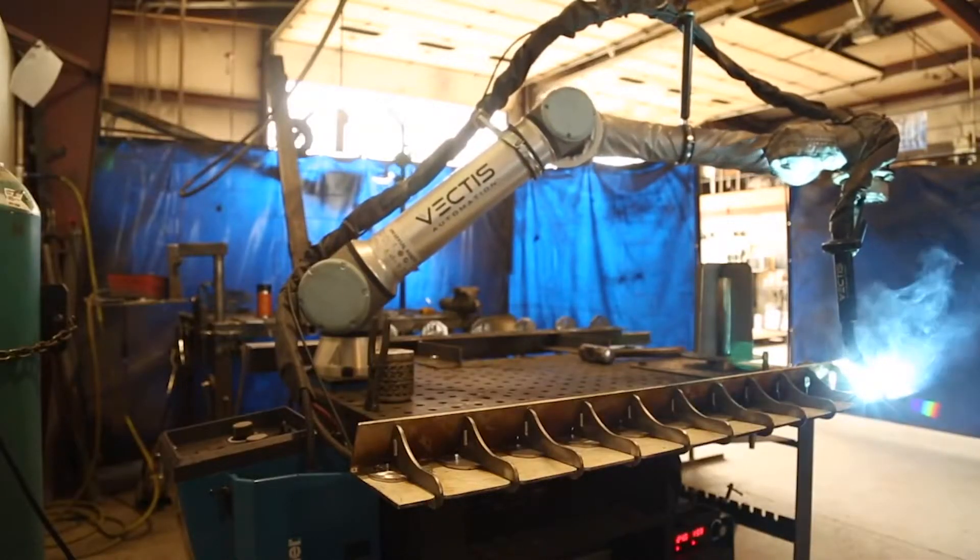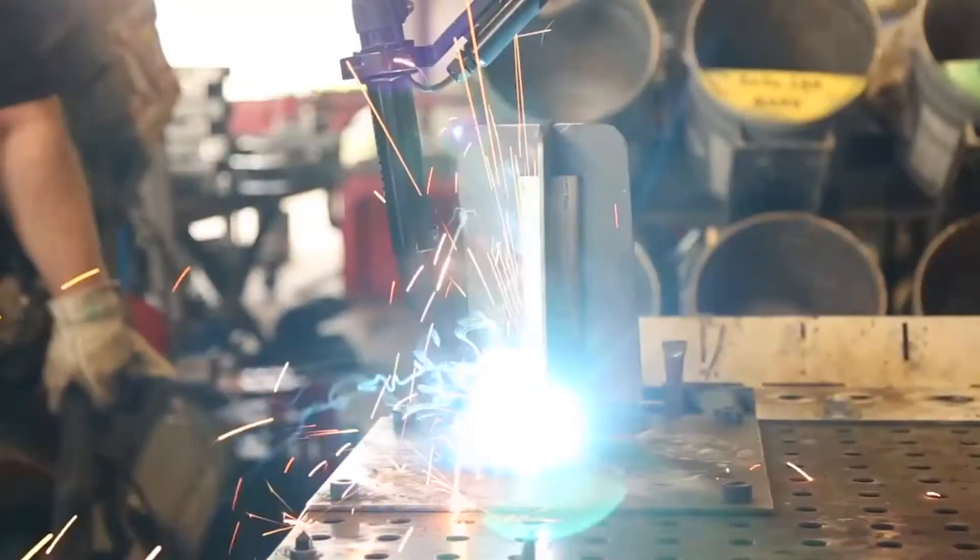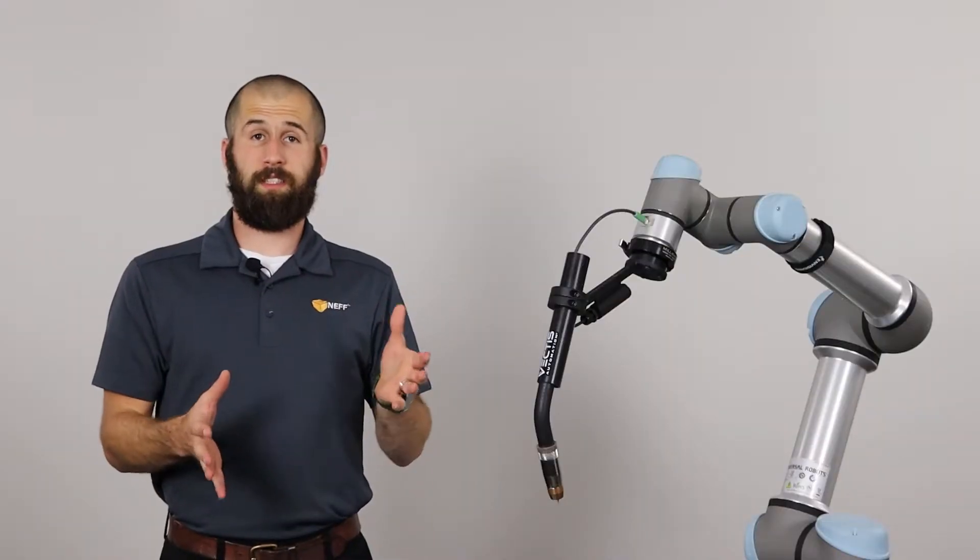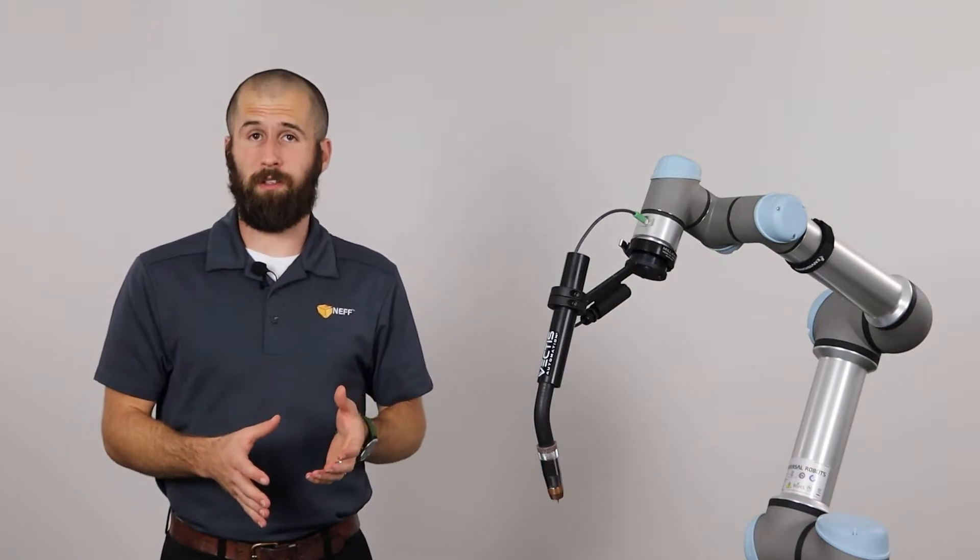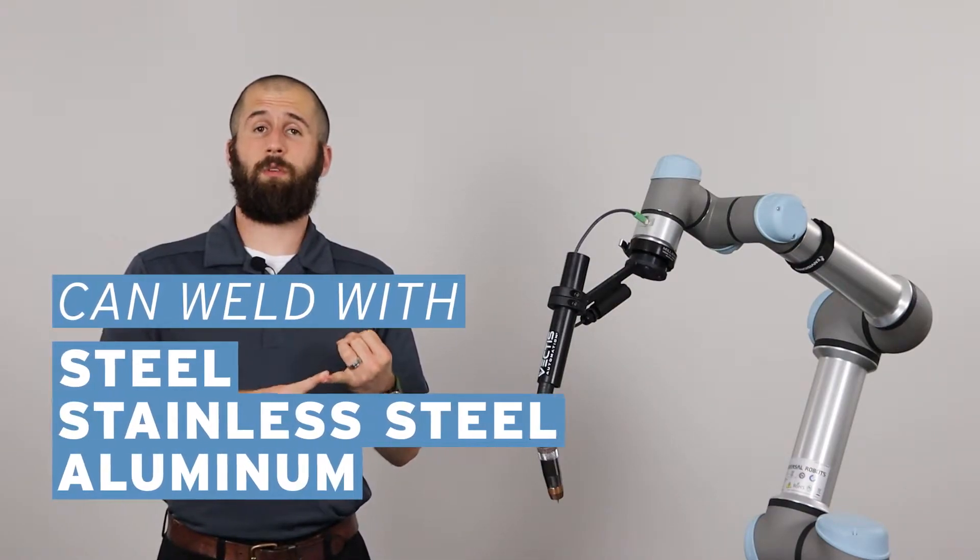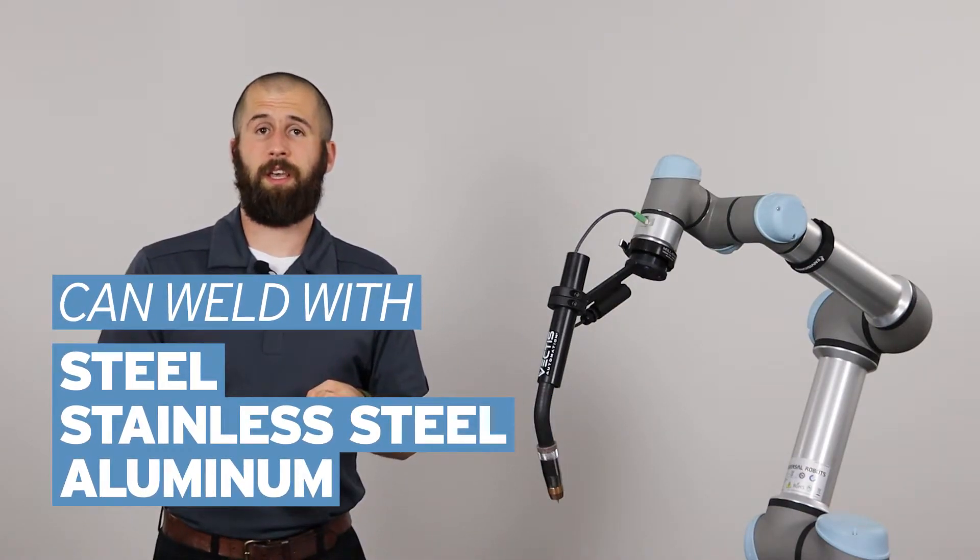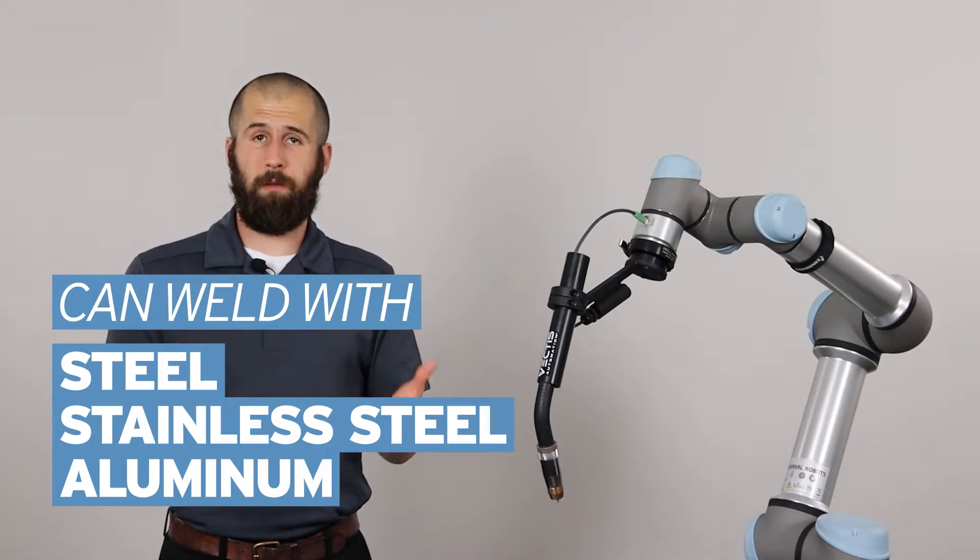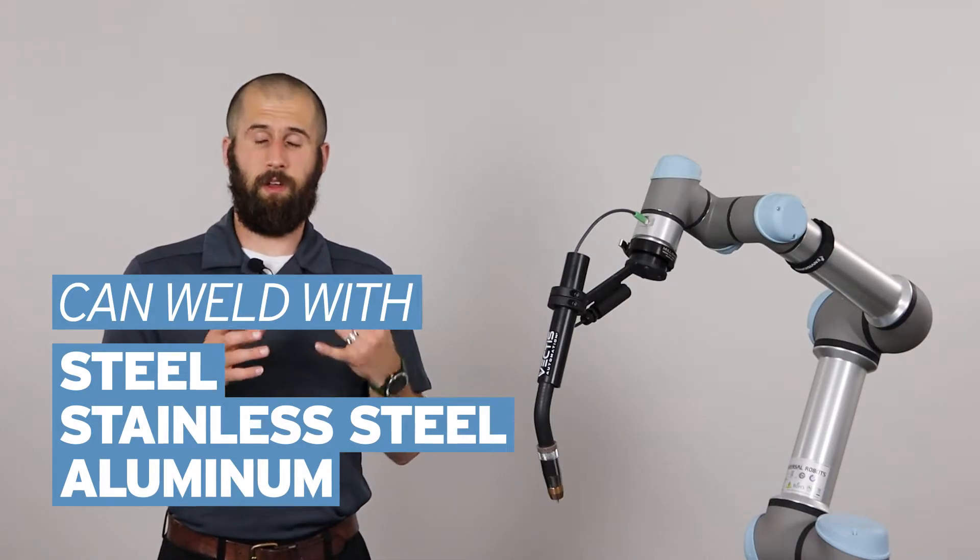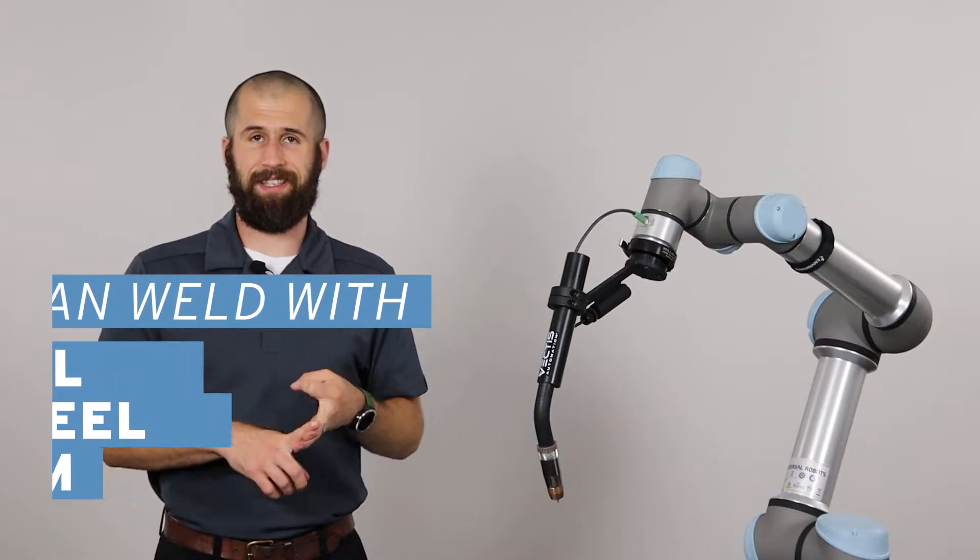The Vectis system provides a safe, mobile, and easy to program welding solution. The Vectis welding system is commonly used for MIG welding either in stainless steel or steel of varying thickness, and it allows you to automate that manual task very accurately, precisely, and consistently.